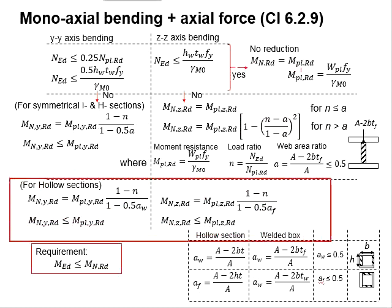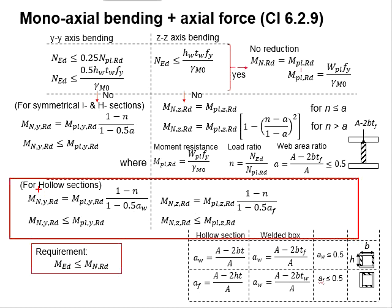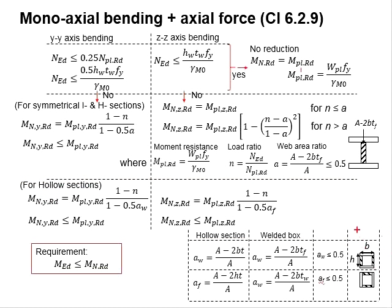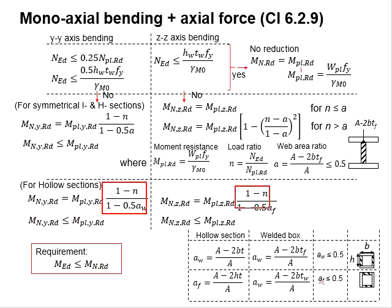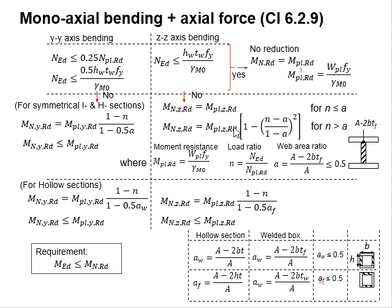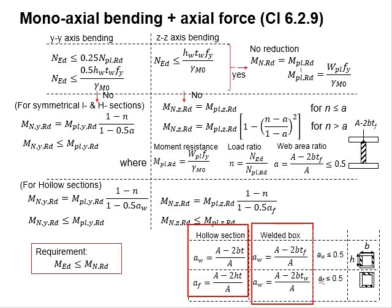This represents the reduced moment equations for hollow sections, such as square hollow sections or rectangular hollow sections. The Y axis and Z axis moment reductions are similar in structure. The parameters AW and AF are defined accordingly, and their values for hollow sections and box sections are given graphically.